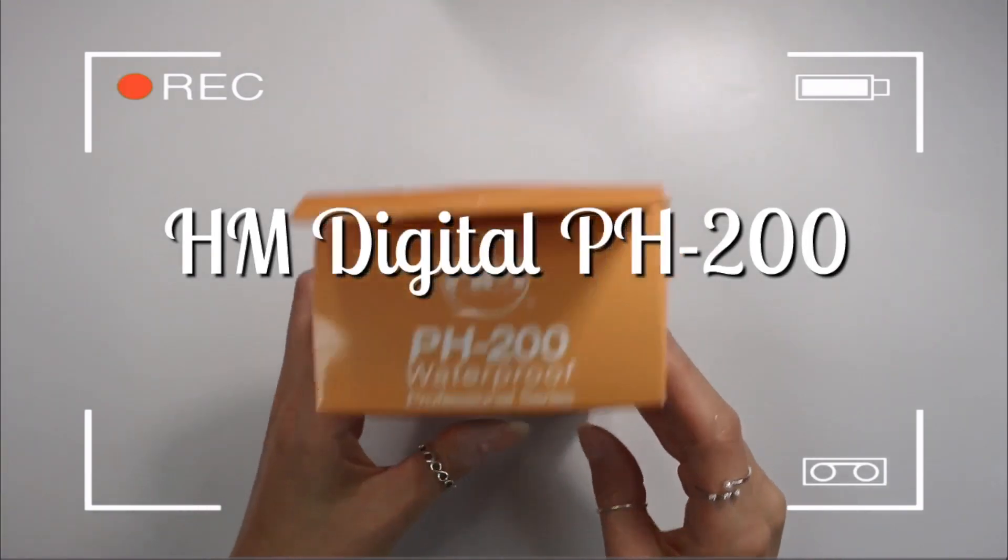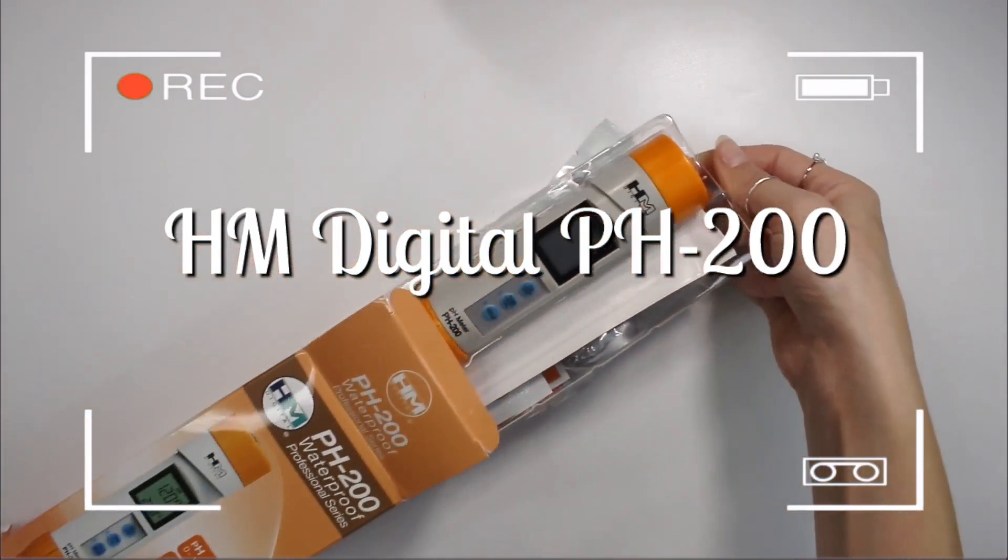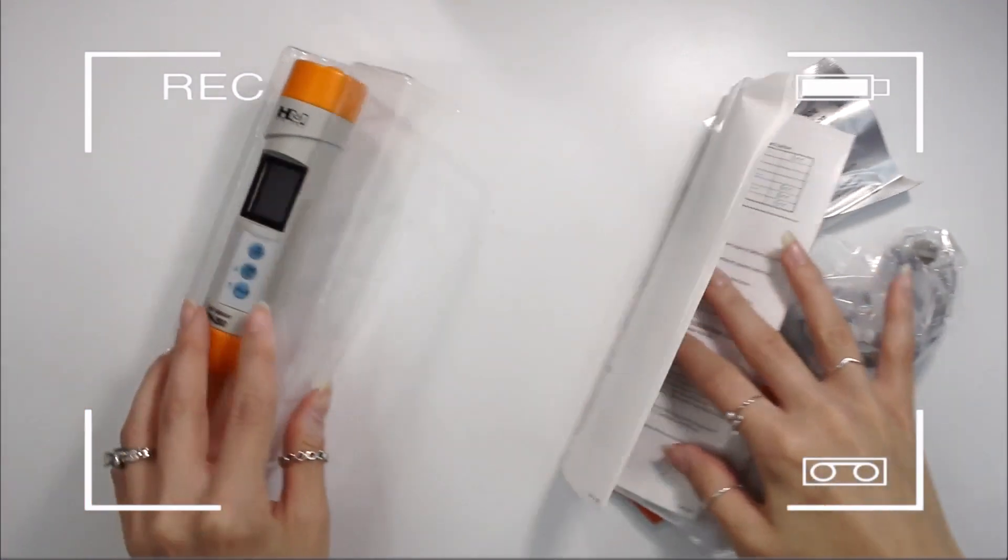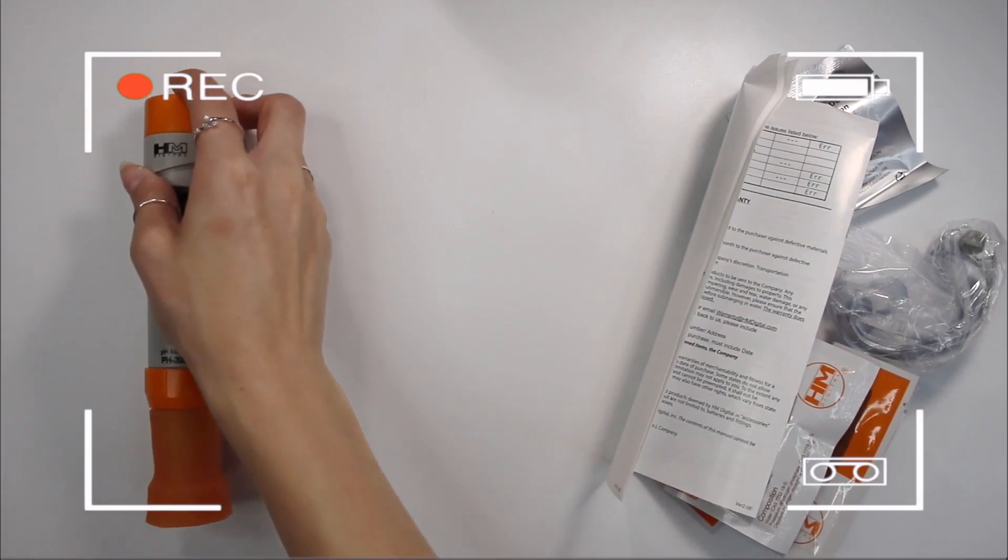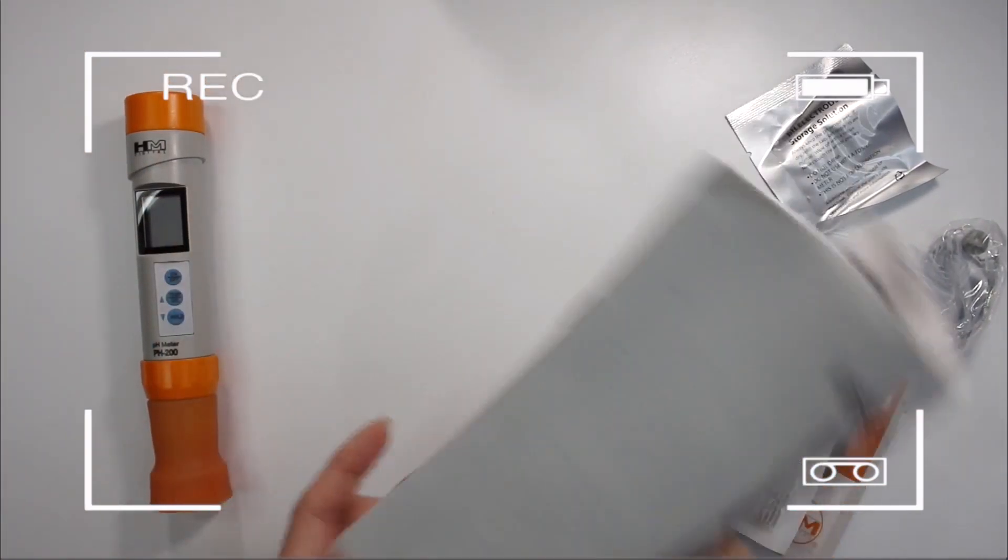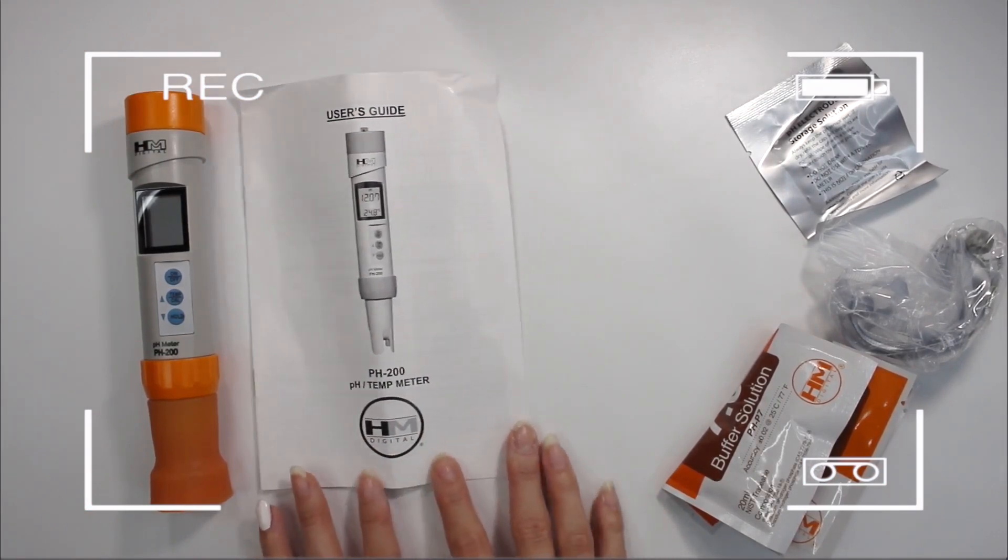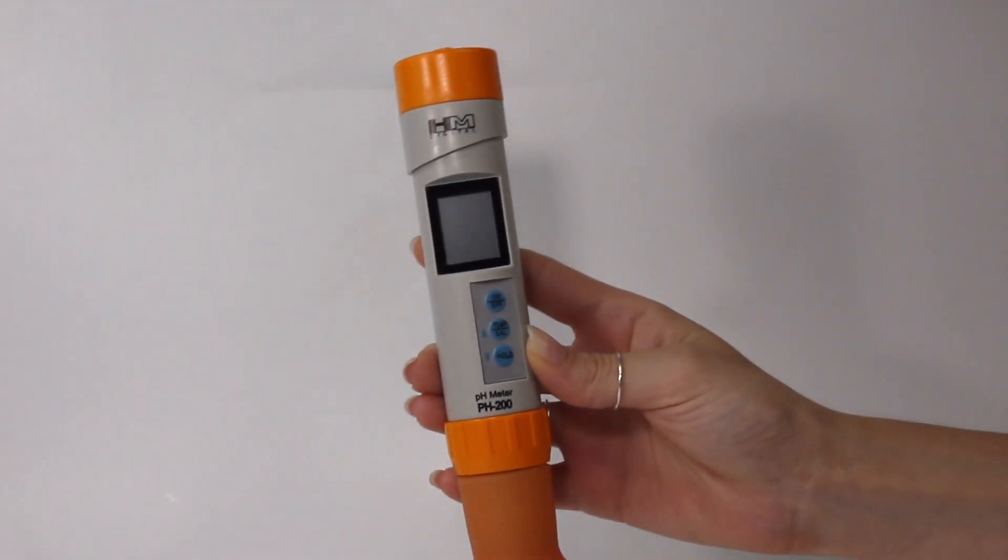It's a video of me unboxing my new HM Digital pH 200 pH meter, and this is a really good high-end pH meter. So if you're serious about making cosmetics and you want to make sure you're getting accurate pH readings of your cosmetics, then I highly recommend this pH meter. And in that video of me unboxing this pH meter, I go into the details on how to calibrate it and how to take care of it.